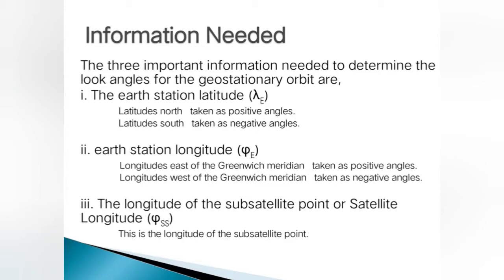Let us consider the orbit is geostationary. The three things that are very important to be considered are: first, the earth station latitude; second, the earth station longitude; and third, the longitude of the subsatellite point, also called the satellite longitude. These are denoted by lambda-e, xi-e, and xi-ss respectively.